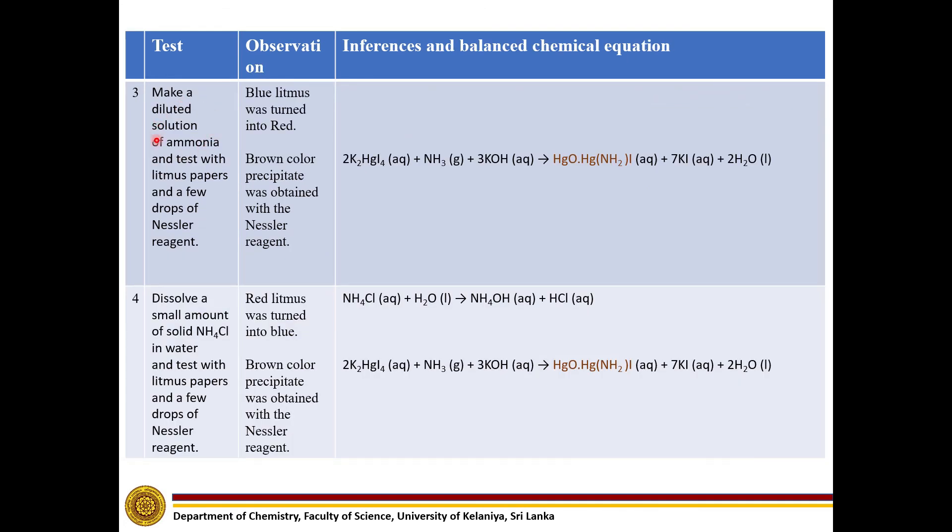Diluted solution of ammonia turns red litmus into blue. Also, with the Nessler reagent, it gives the same brown color precipitate.